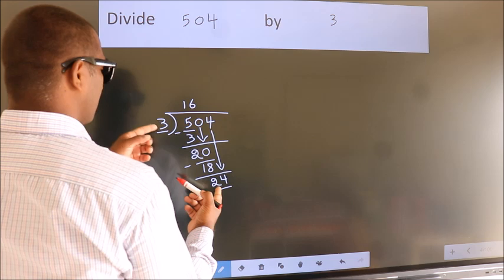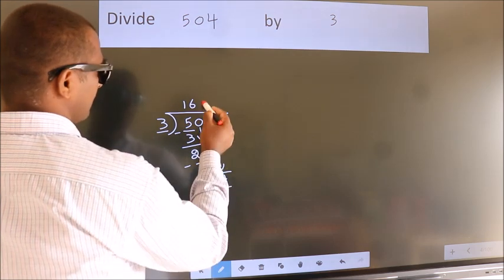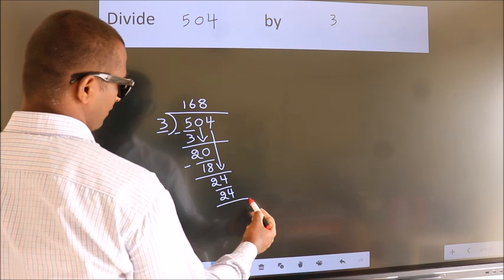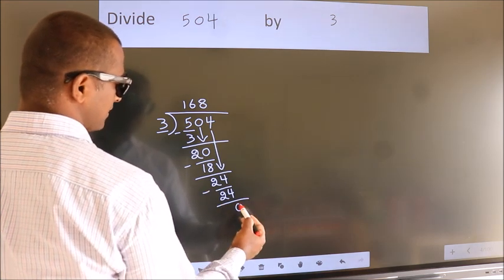When do we get 24? In 3 table. 3, 8, 24. Now, we subtract. We get 0.